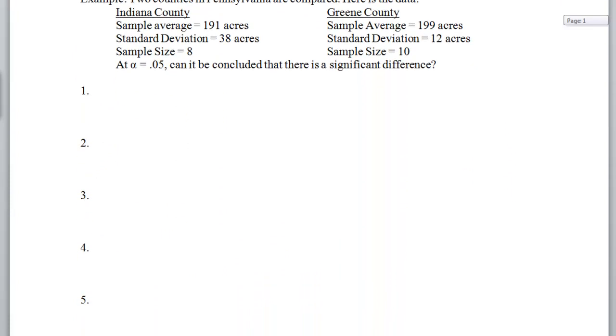You may note that this number here is what's in the book, and on my worksheet that might have been 171, so make sure you change that. We're looking at two counties in Pennsylvania, comparing them. Indiana County has sample average 191 acres, standard deviation 38 acres, sample size 8. Greene County has sample average 199 acres, standard deviation 12 acres, sample size 10. Is there a significant difference according to an alpha of 0.05? Our null hypothesis is that these averages are the same, and our alternative hypothesis is that the averages are not the same. So this is going to be a two-tailed test.